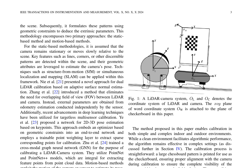The calibration of LiDAR camera systems is a pivotal task in various applications including robotics, autonomous vehicles, and computer vision. This paper provides an extensive overview of existing methodologies for extrinsic calibration, which entails determining the rigid transformation relationship between the LiDAR and camera. The static-based method assumes a stationary or slowly moving camera, leveraging geometric attributes of key features to estimate the camera's pose. Techniques such as structure from motion (SFM) and simultaneous localization and mapping (SLAM) can be applied within this framework.